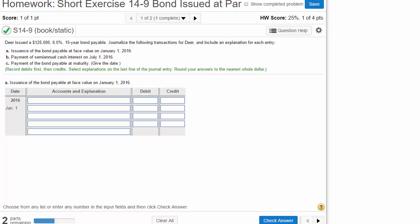Short exercise 14-9, issuing a bond at par value. Issuing a bond at par value means, in this case, we have $125,000 worth of bonds. That's the exact price we get for the bond issuance. Par means we get the par value, which is the maturity value.